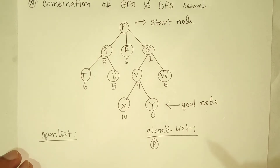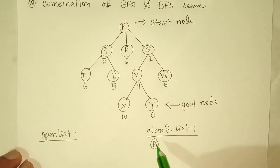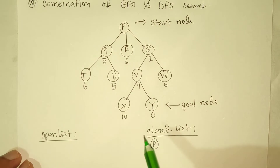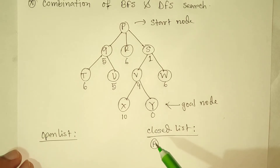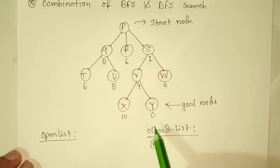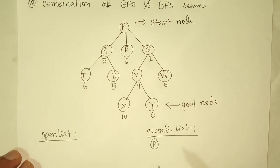The P node is in the closed list. The M node page is also in the close list. If the goal point is reached, we stop the algorithm. We already see that the goal node is not reached, so we have further more to go. The P node will be visited from the closed list and we will check the closed list.